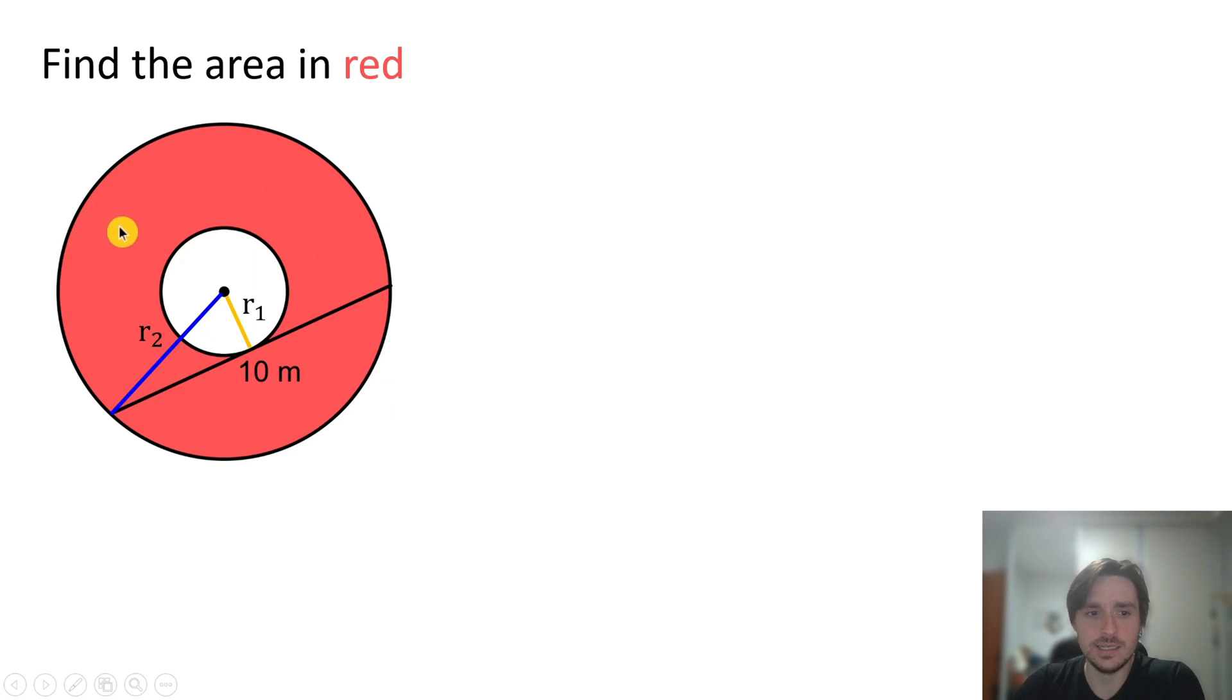So the area in red will be the area of the outer circle, which is given by πr2², subtracted by the area of the inner circle, which is given by πr1². So we can factor out π to obtain that the area is π(r2² - r1²). Let's put a box around it because it's this equation that solves our problem.